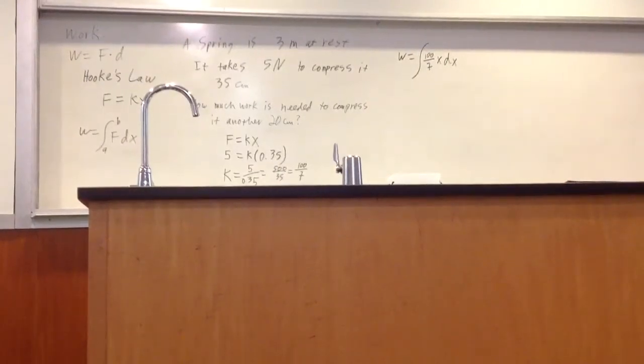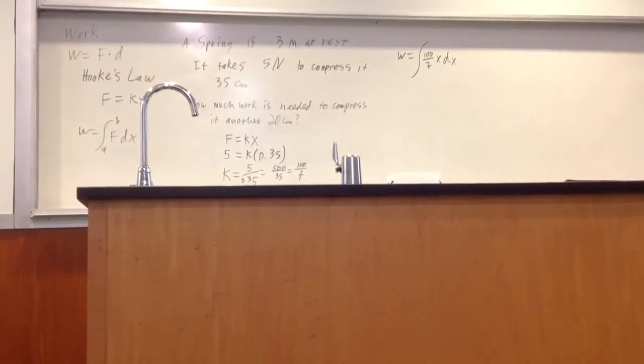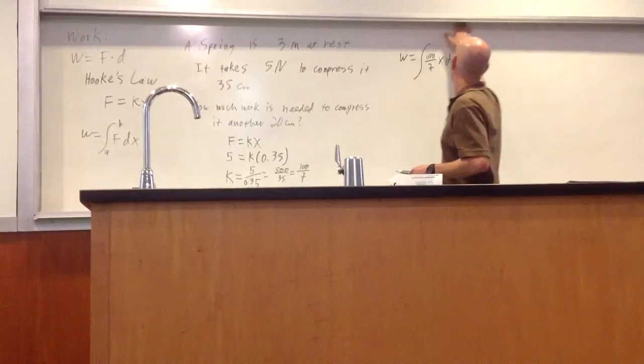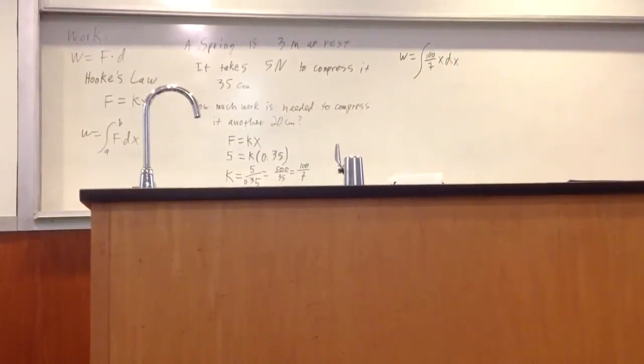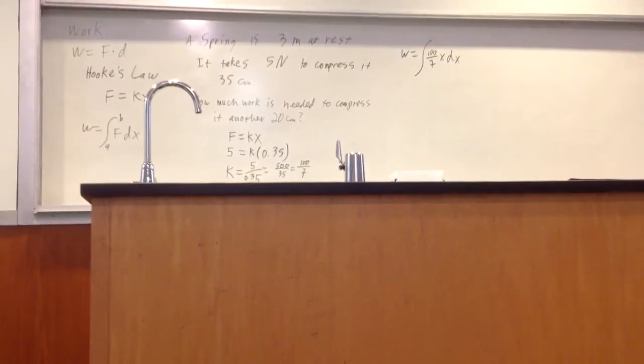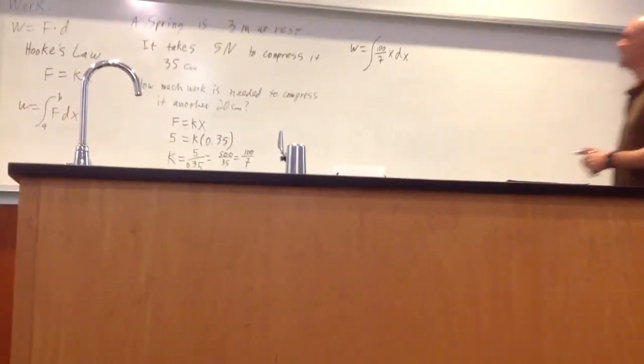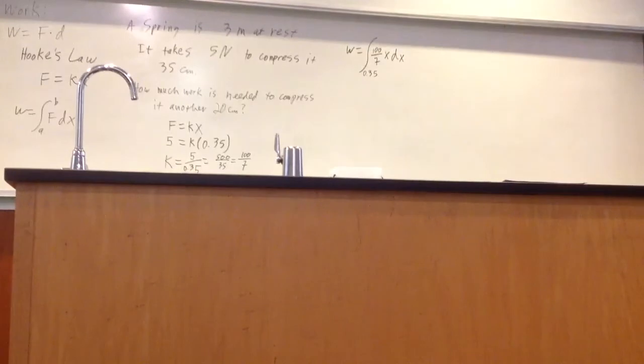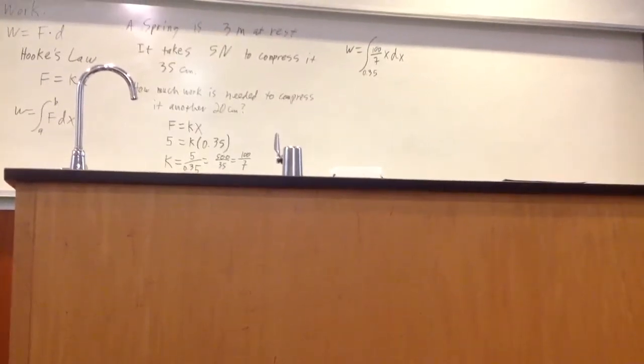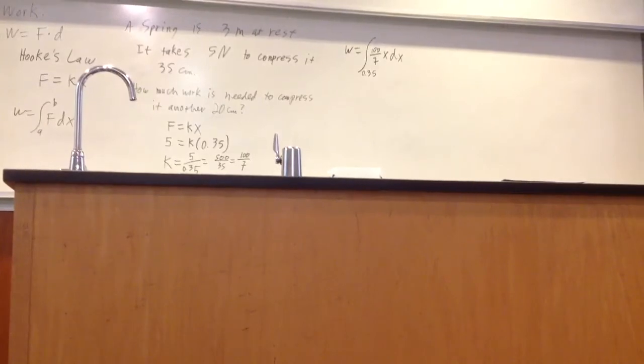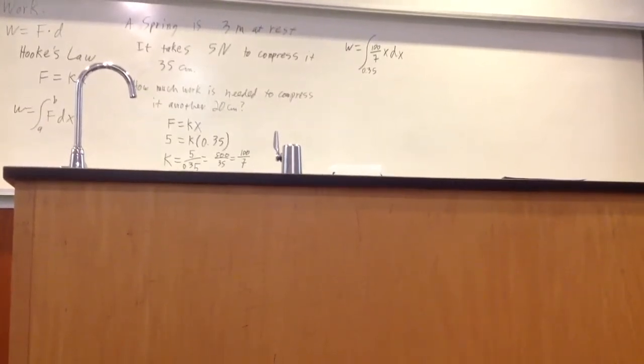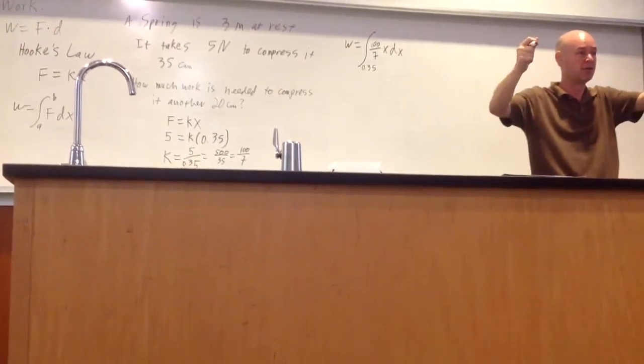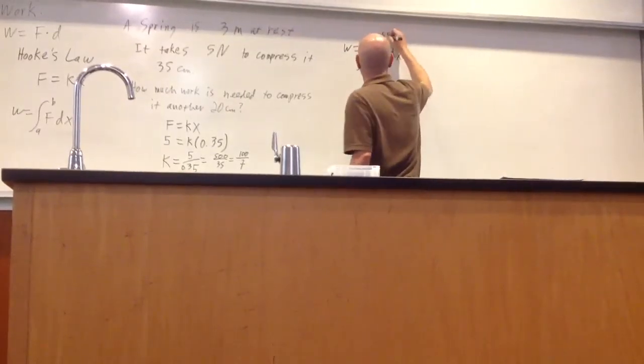Now we've got to talk about the boundaries. I want to talk about the way this is worded. Notice that we're compressing it another 20 centimeters. So we are already starting at 35 centimeters. In other words, I'm compressing it 35 centimeters. I don't care how much energy was spent there. I want to know how much energy is spent if I want to compress that another 20 centimeters. So I'm going from 0.35 to what? 0.55.